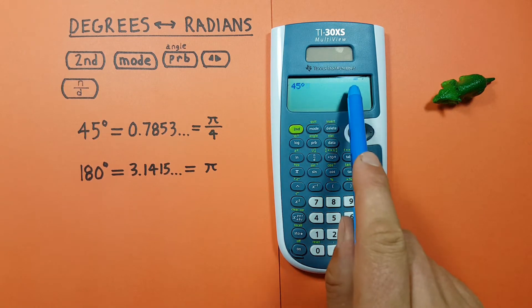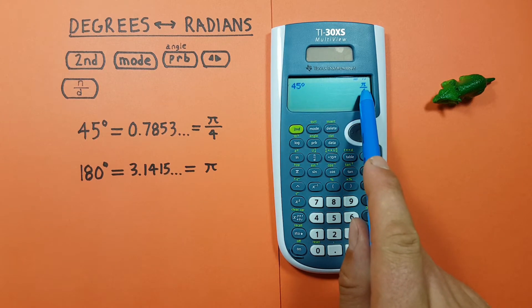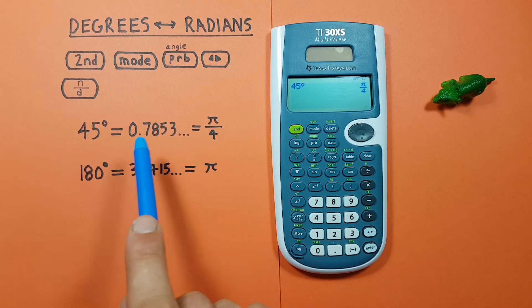Since we're in radians mode, if we press enter again, we see we get a result of pi over 4. So we know 45 degrees is pi over 4 radians.